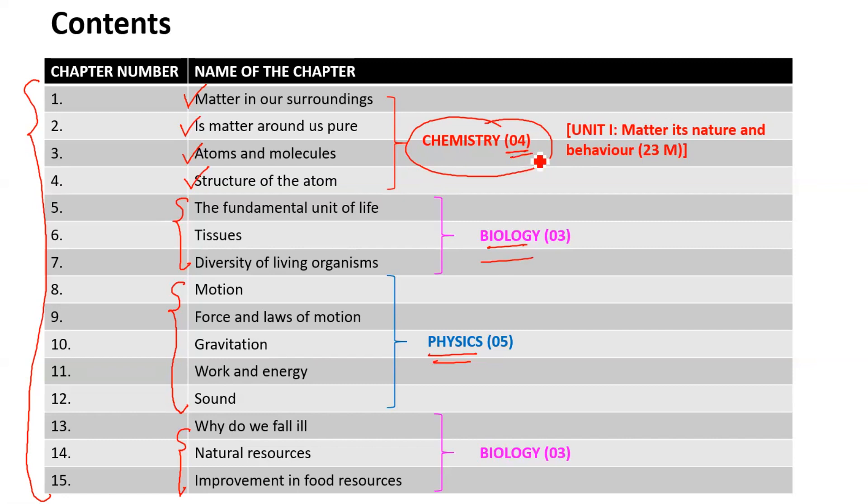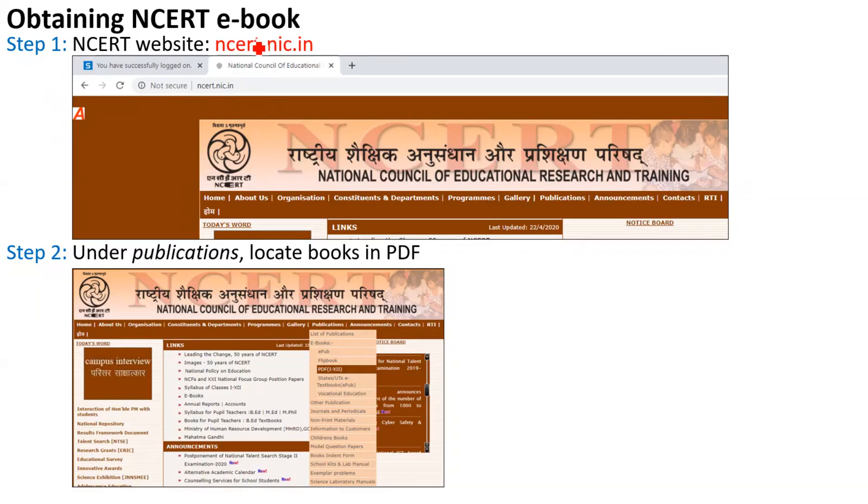Coming to our Chemistry portion, these 4 chapters collectively make up Unit 1, which is Matter, Its Nature and Behavior, which has a weightage of total 23 marks in your examination. Don't worry, I would be explaining in detail the examination pattern and mark distribution of science in another video sometime later.